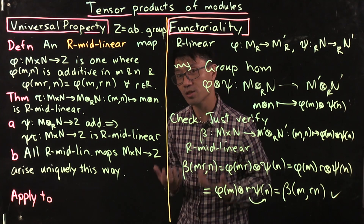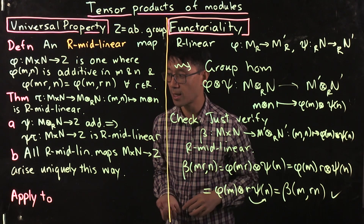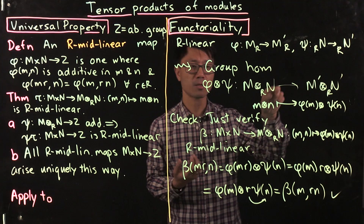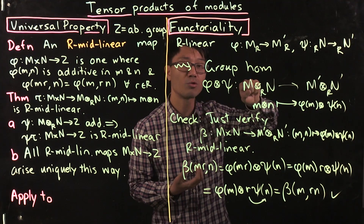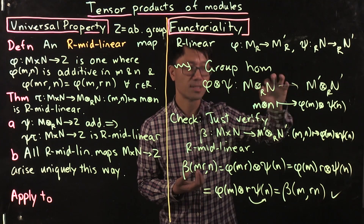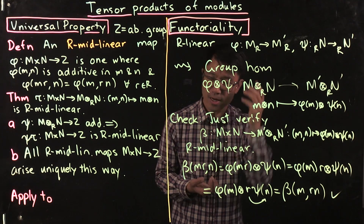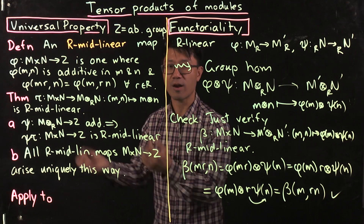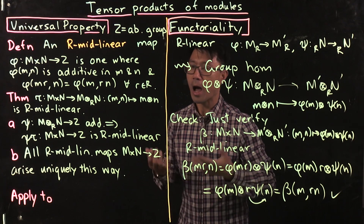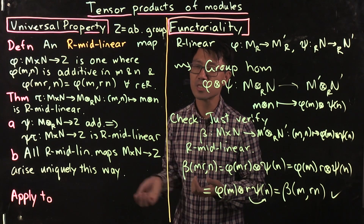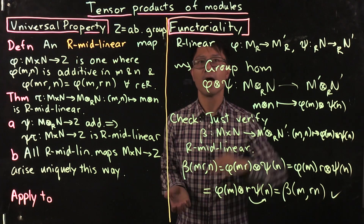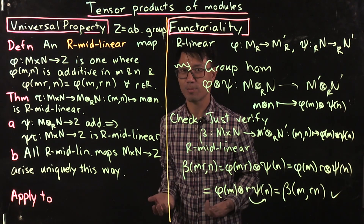We also saw for tensor products of vector spaces there are other uses for the universal property. For example, one of the things you can show is that you have a distributive law — when you take a tensor product, in one of the variables you can have a direct sum of right R-modules, and that's related to the tensor products of the direct summands with N. It turns out there is a distributive law, and that follows straight from the universal properties. In this video we've seen that tensor products of modules are very similar to tensor products of vector spaces — they have very similar properties, the universal property holds, and so does functoriality. I hope you enjoyed this adventure in pure mathematics.